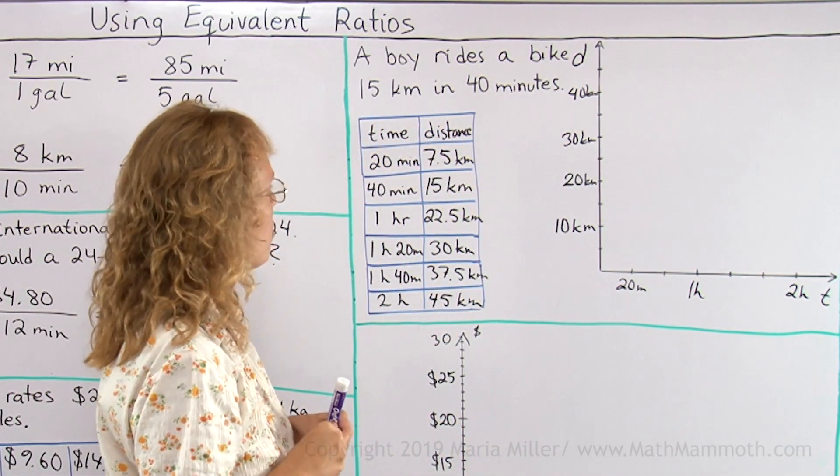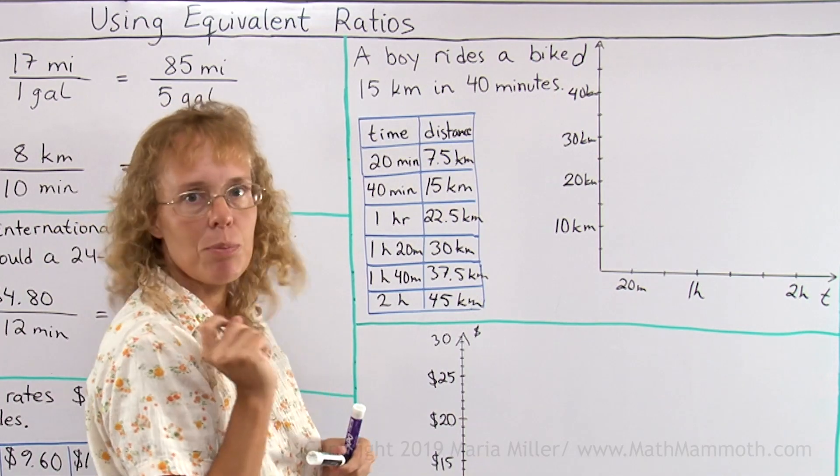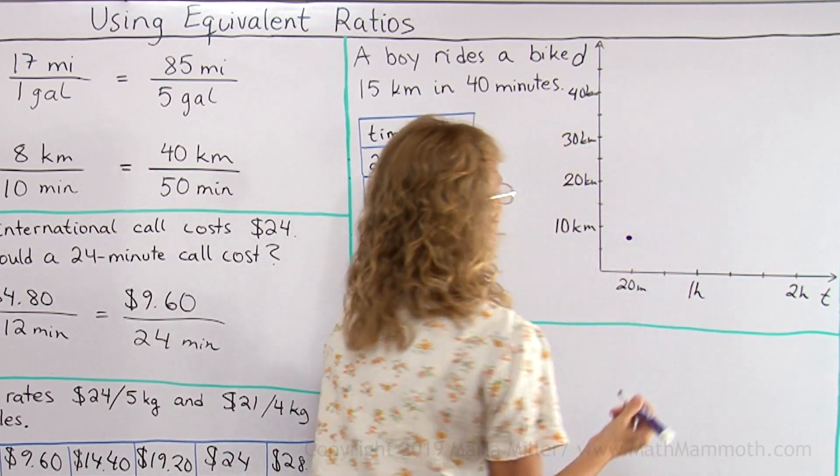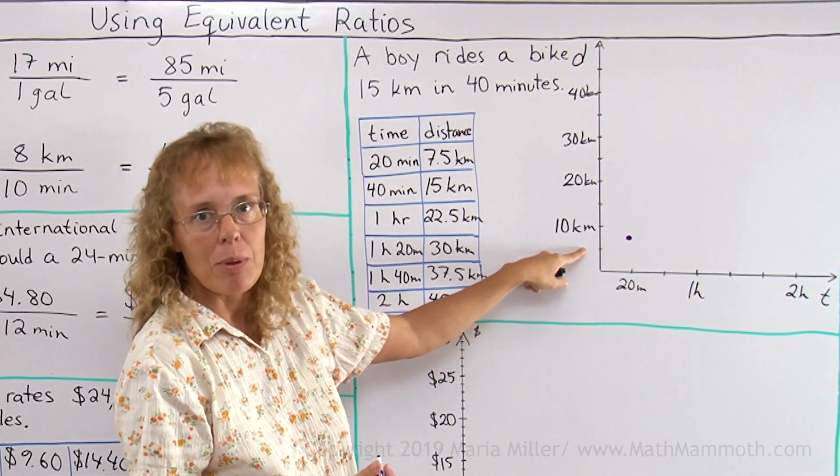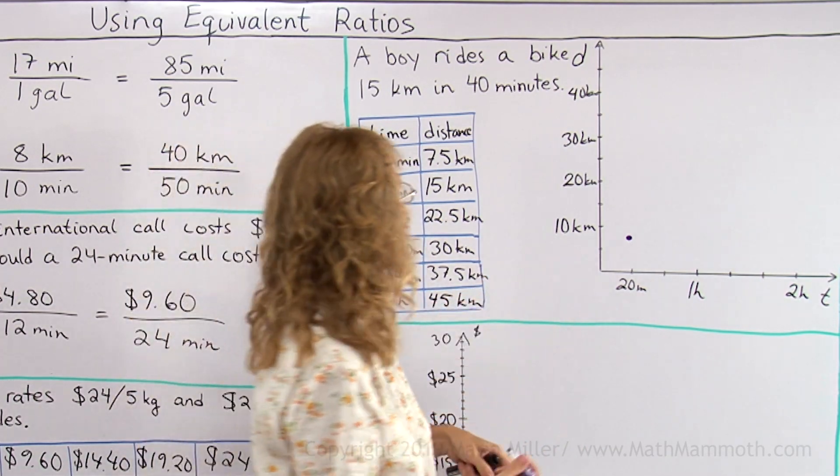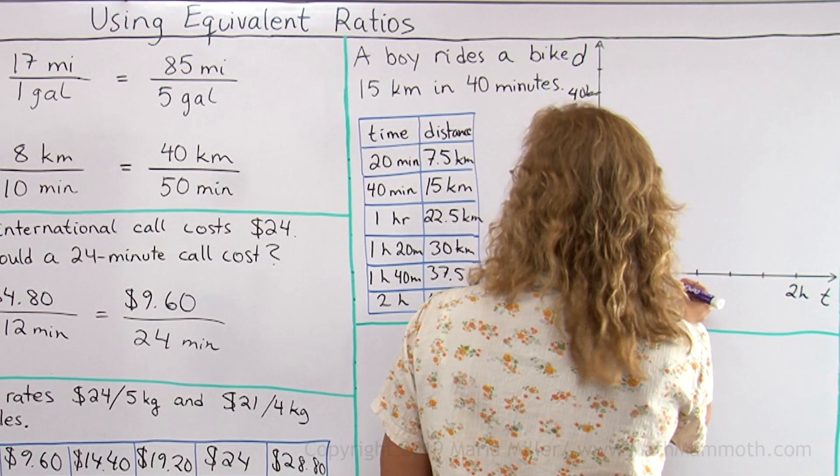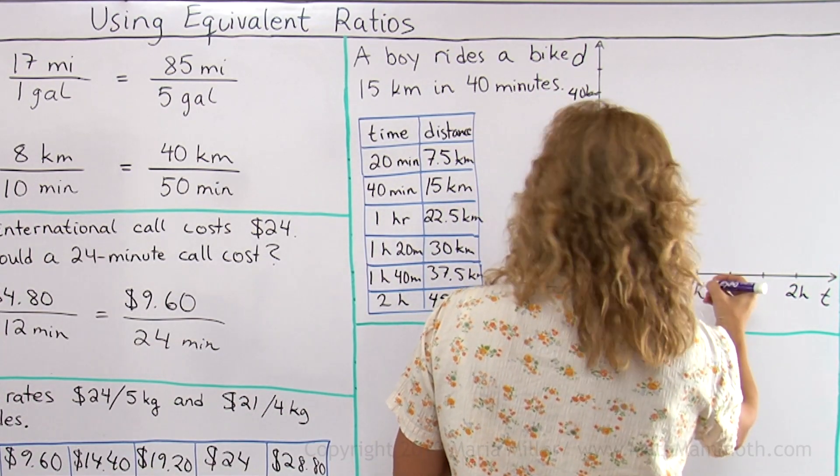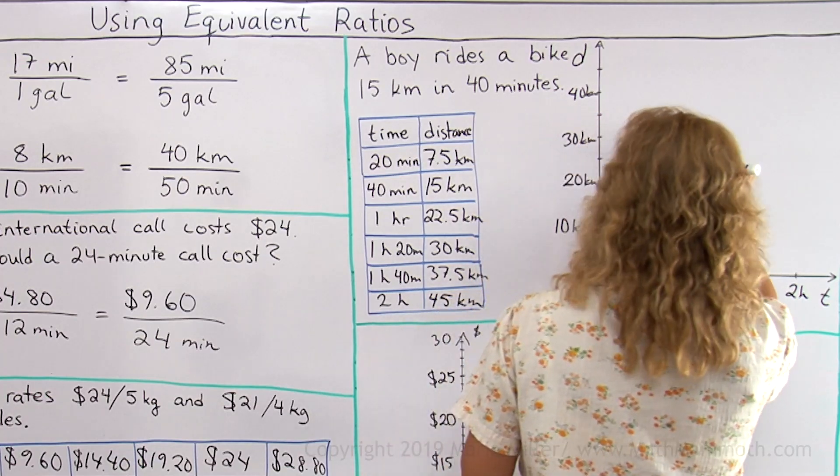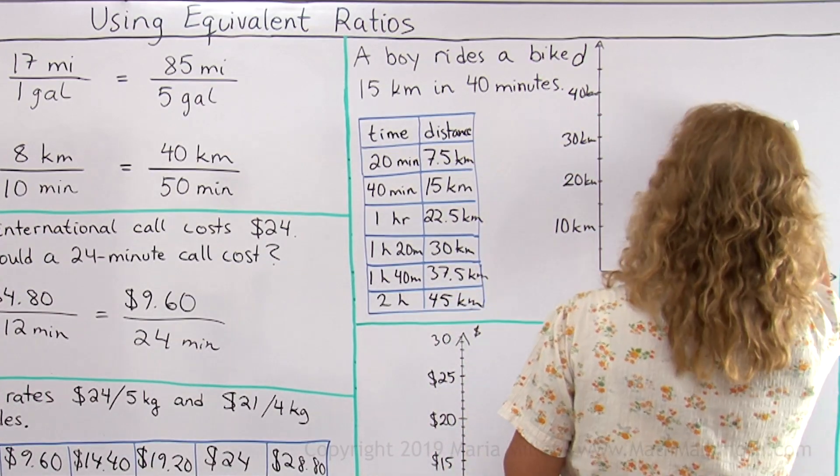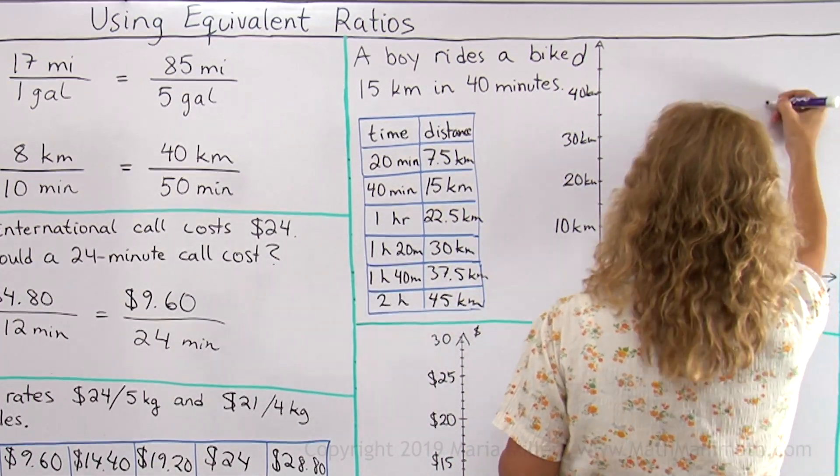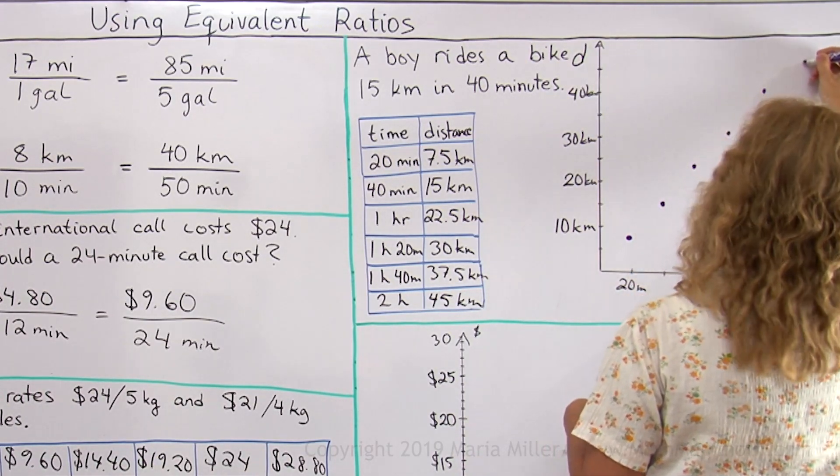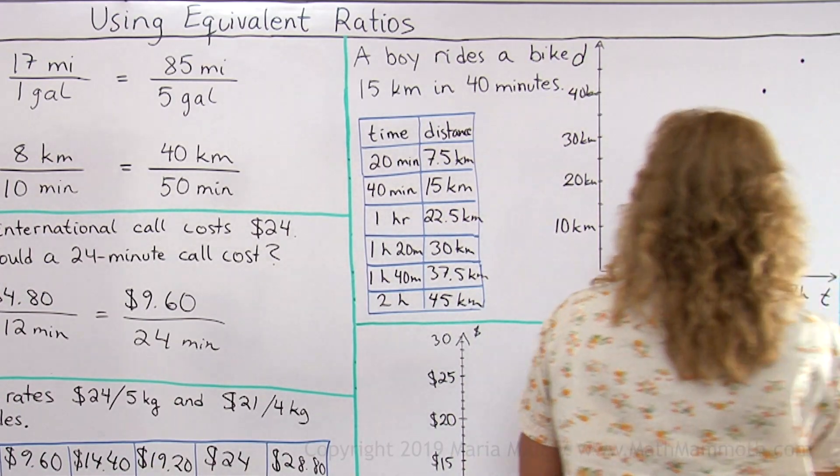Okay. Now, the first point would be at 20 minutes and 7.5 kilometers. 7.5 kilometers would be halfway between the 5 and 10 kilometers here. Then, 40 minutes and 15 kilometers. One hour, 22 and a half. Then 30 kilometers. Then 37 and a half. And lastly, here, 45 kilometers.